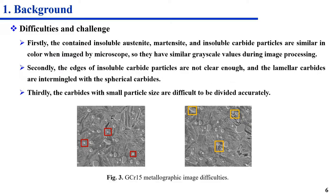Let me introduce the difficulties in segmenting the insoluble carbides in the metallographic images of GCR-15 bearing steel. Firstly, the contained insoluble austenite, martensite, and insoluble carbide patterns are similar in color, and since the images are captured by microscope, they have similar grayscale values during image processing. Secondly, the edges of insoluble carbide particles are not clear enough, and the lamellar carbides are intermixed with the spherical carbides. Thirdly, the carbides with small particle size are difficult to be divided accurately.